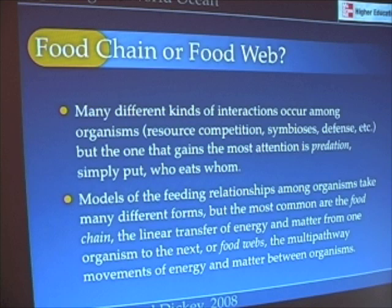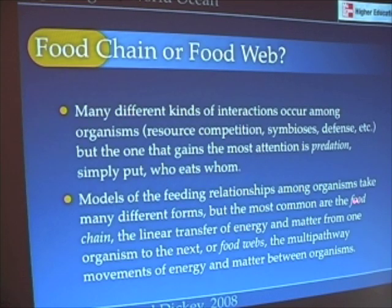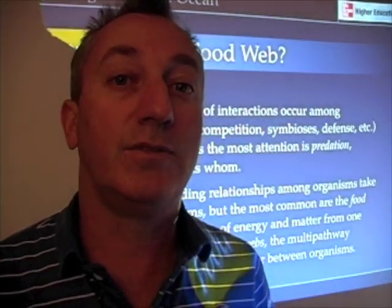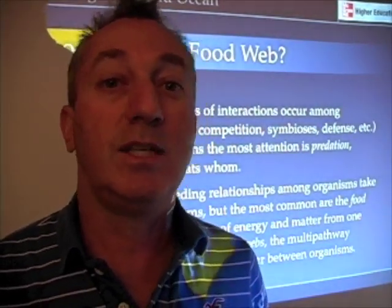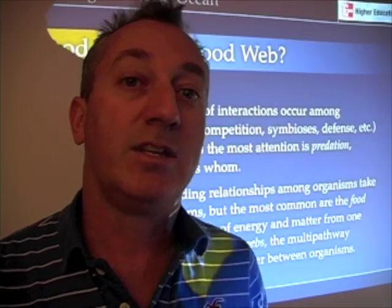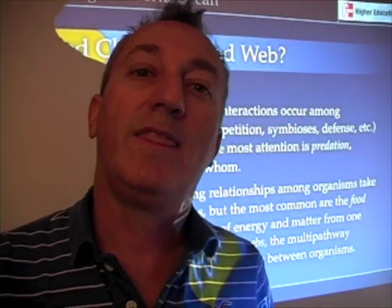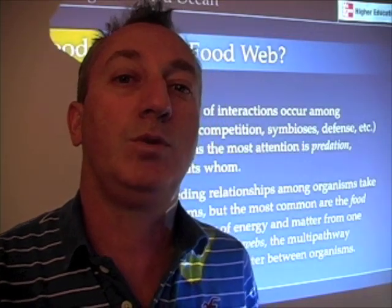Models of the feeding relationship — who eats whom — may take many different forms, but the most common one is the food chain. A food chain is really the linear transfer of energy and matter from one organism to the next. A good example is a larger fish eating a smaller fish, which eats a smaller fish than that. So big fish eats middle-sized fish, eats little-sized fish. That's an example of a food chain.